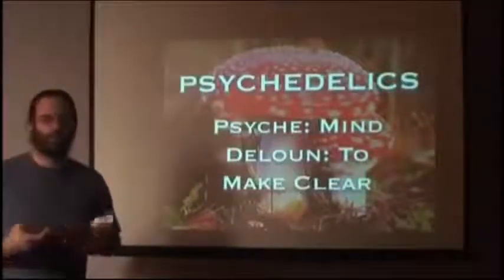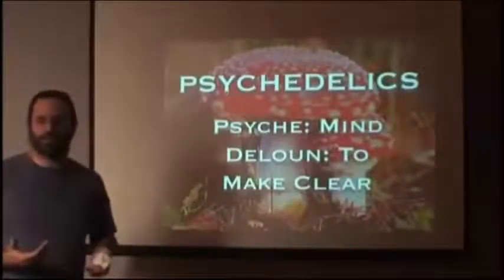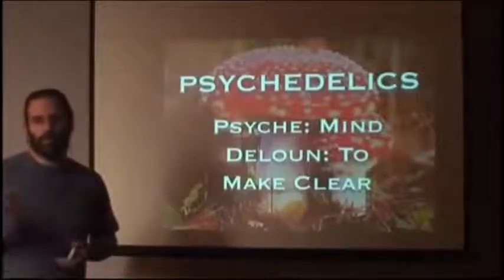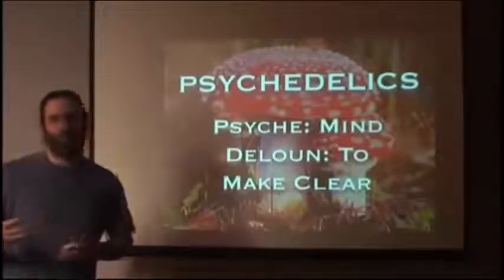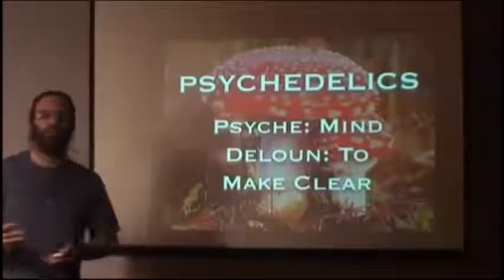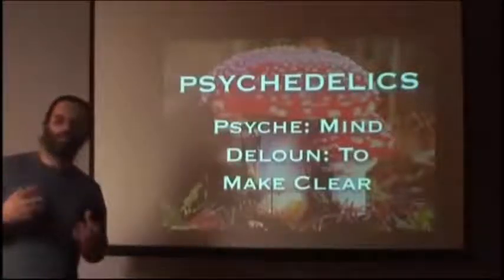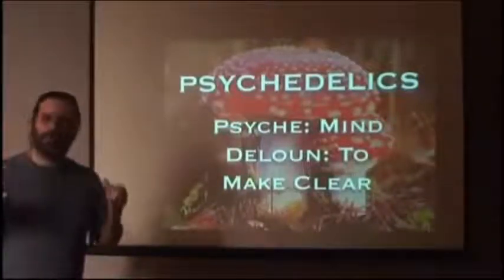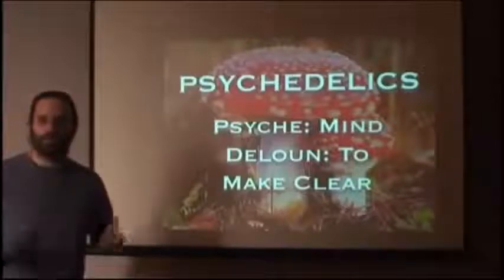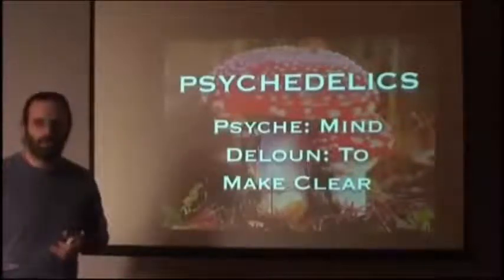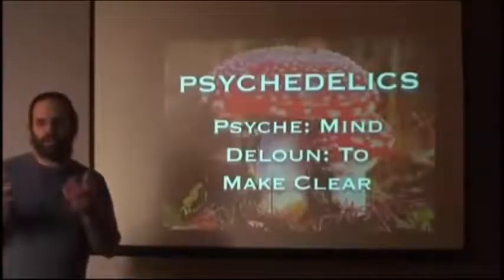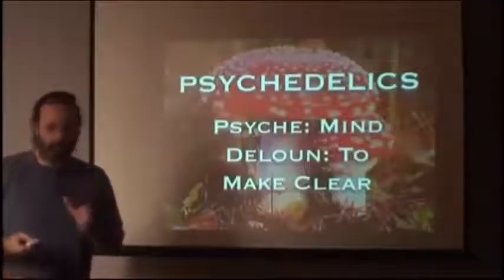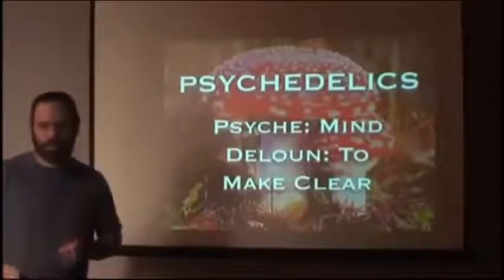Entheogens have also been called psychedelics. 'Psyche' in Greek means the mind; 'delun' in Greek is a verb which means to make clear. So we can see things clearly in the mind when we commune with a psychedelic. They are capable of making the mind clear if they are used in a conscious context.